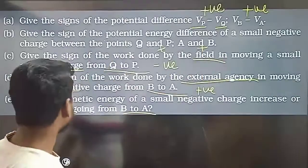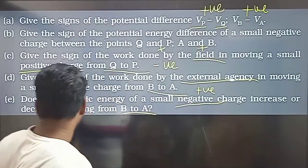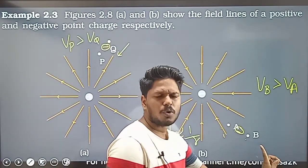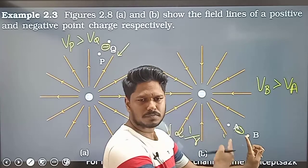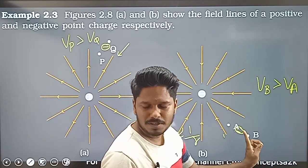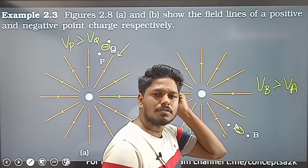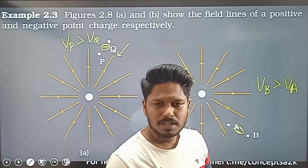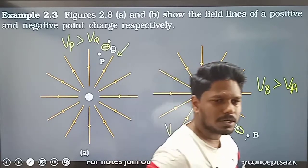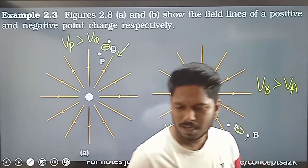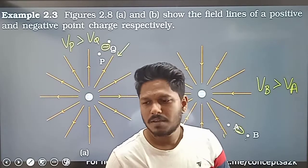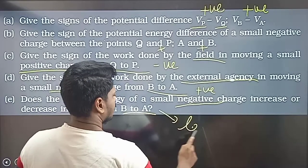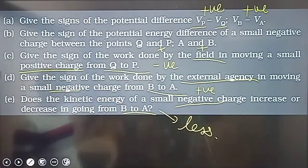Taking a negative charge: the charge moves from B to A. The ripple (force on the charge due to field) acts. The velocity of the charge decreases — basically the kinetic energy decreases as it moves against the field force on a negative charge.